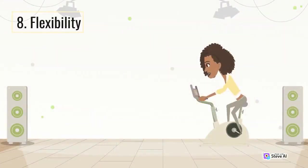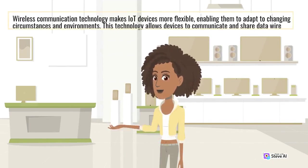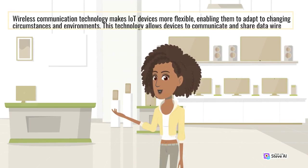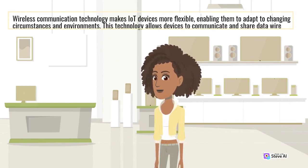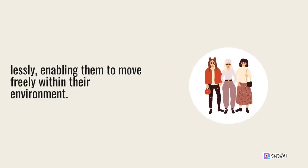8. Flexibility. Wireless communication technology makes IoT devices more flexible, enabling them to adapt to changing circumstances and environments. This technology allows devices to communicate and share data wirelessly, enabling them to move freely within their environment.